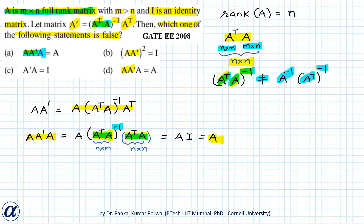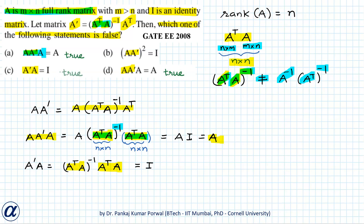So A times A dash times A equals A. The statements in options A and D are identical — both say A into A dash into A equals A — and that is true. Similarly, A dash times A equals identity, so the statement in option C is also true. Therefore only the statement in option B is false, and option B is the correct answer.